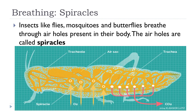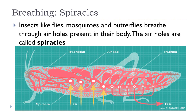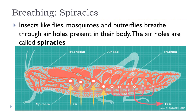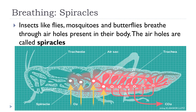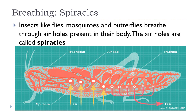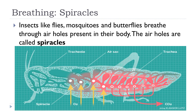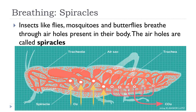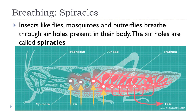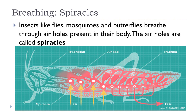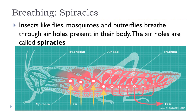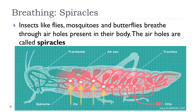Insects like flies, mosquitoes, and butterflies breathe through air holes present in their body. The air holes are called spiracles. These are found on the sides of the body of insects. Air enters into the body of the insect through spiracles, which lead to a number of air tubes. These air tubes form a fine network that allows the air to reach every tissue in the body of the insect.